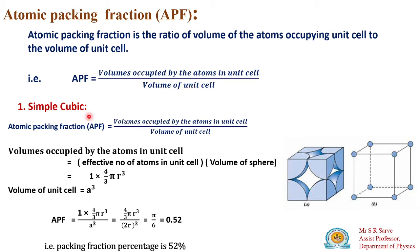Let us take the simple cubic structure first. In a simple cubic unit cell, atoms are located only at the corners. There are eight atoms at the eight corners of this cubic unit cell. The atomic packing fraction is the ratio of volume occupied by the atoms in the unit cell divided by the volume of the unit cell.